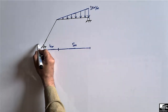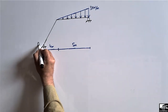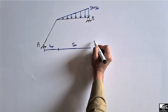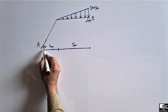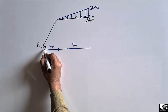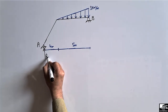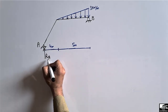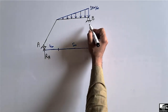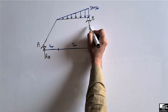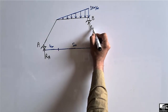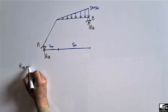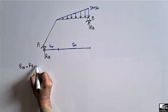Let us consider that this hinge support is support A and this roller support is support B. Since there is a hinge support, it can resist vertical and horizontal loads, but as there is no horizontal load on this frame, there will only be a vertical reaction at A. There will also be a vertical reaction R_B at B. So we need to find out R_A and R_B, which are both unknown.